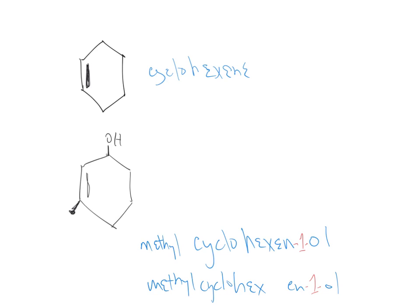What will be the locant for the double bond? Two. You can put the two there, or you can put the two directly before the EN. That's why I wanted to show you both ways. And then finally, we have the methyl group. The methyl is going to be number three. So this is 3-methyl-2-cyclohexene-1-ol, or you could also say 3-methyl-cyclohex-2-ene-1-ol.